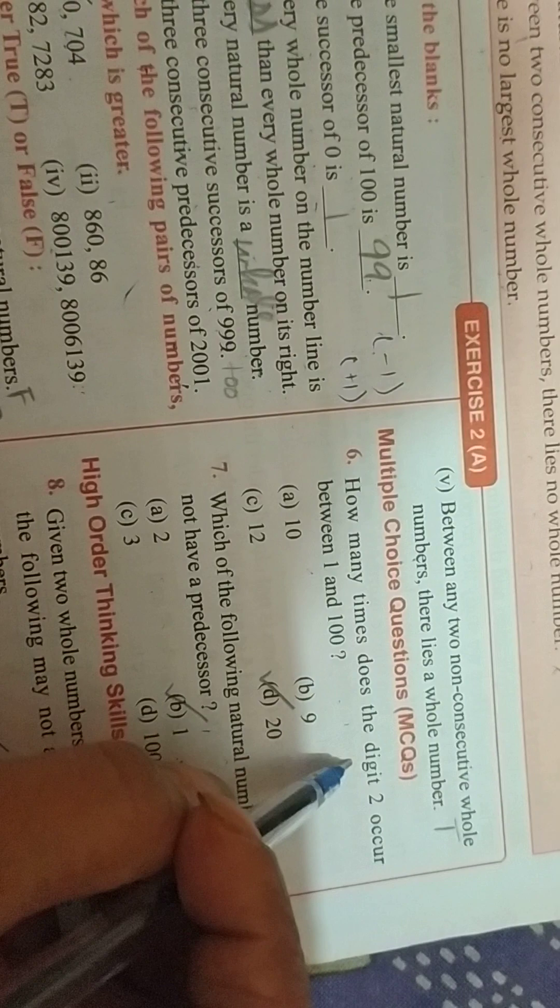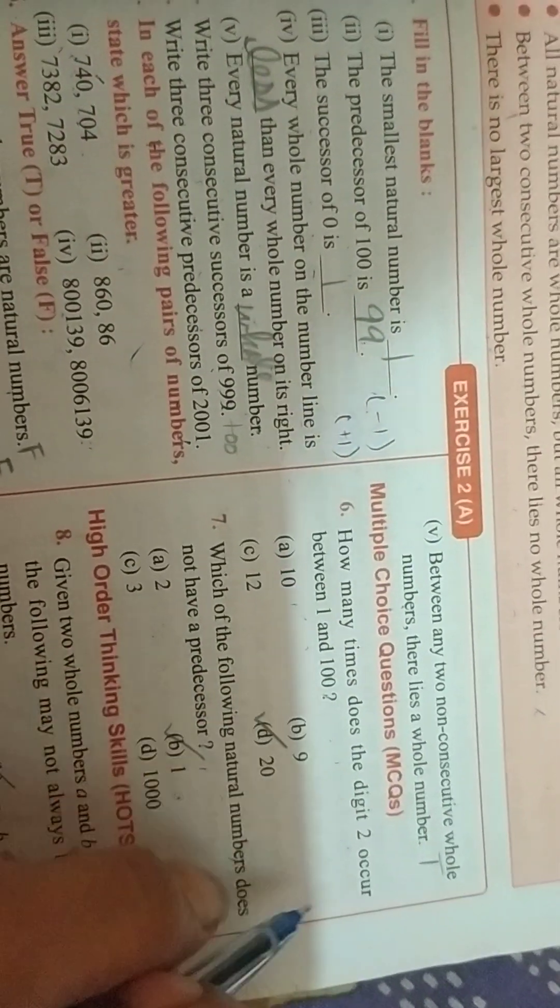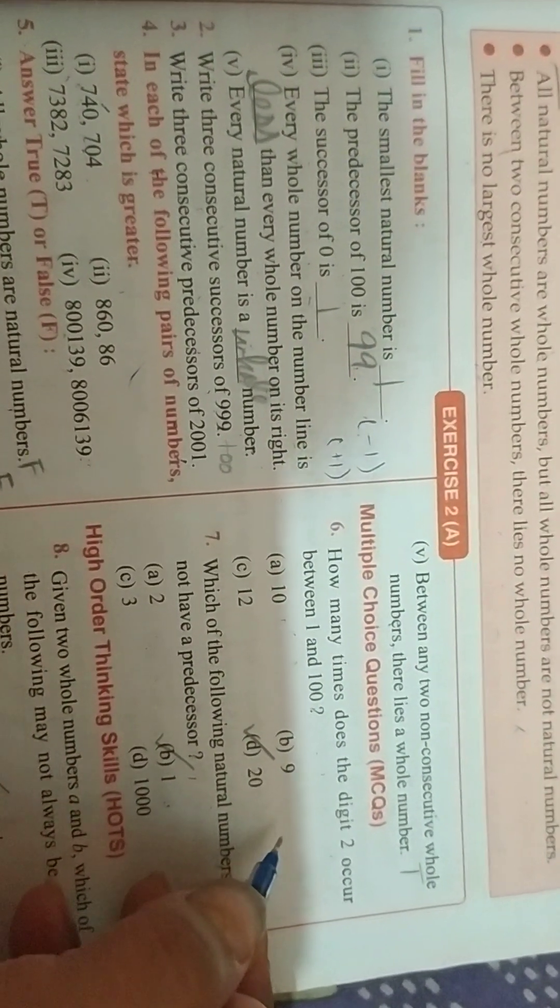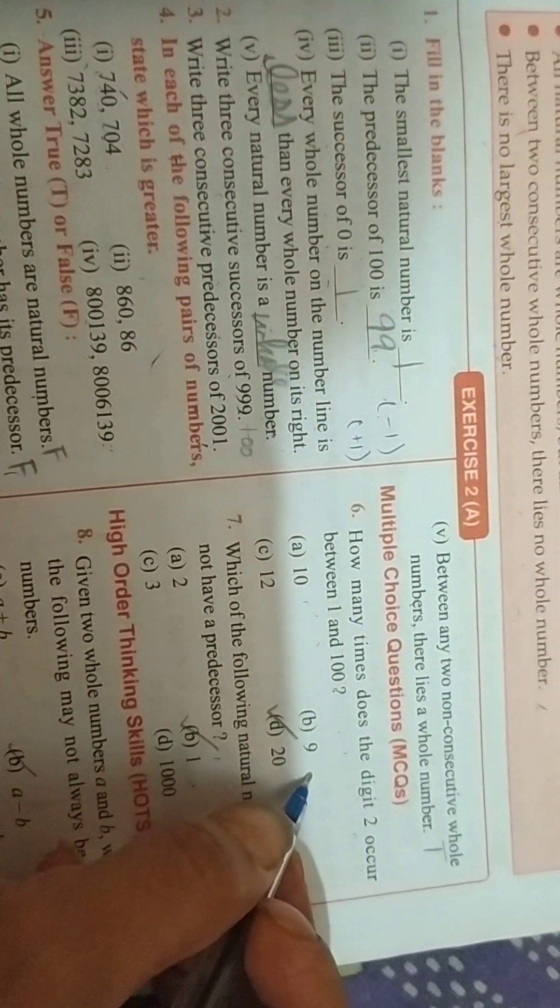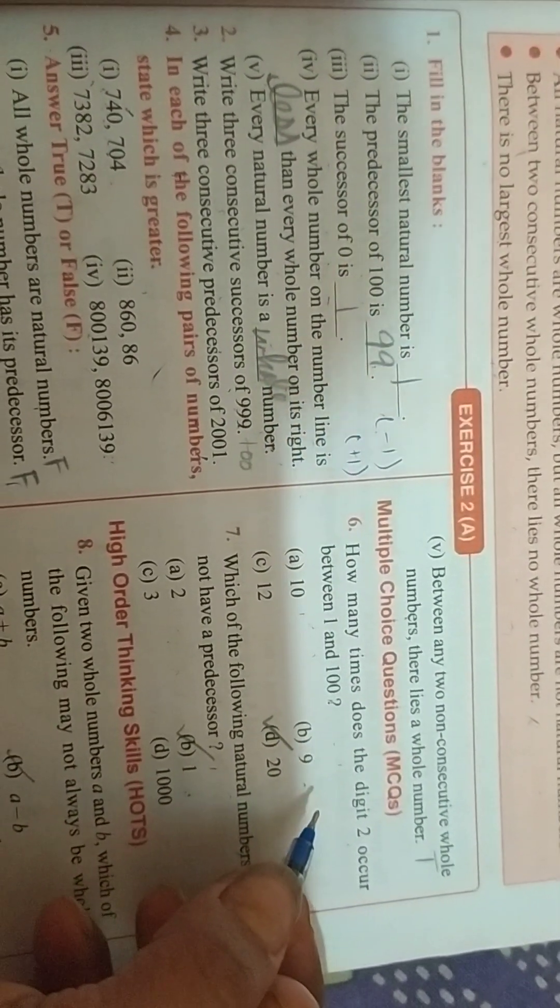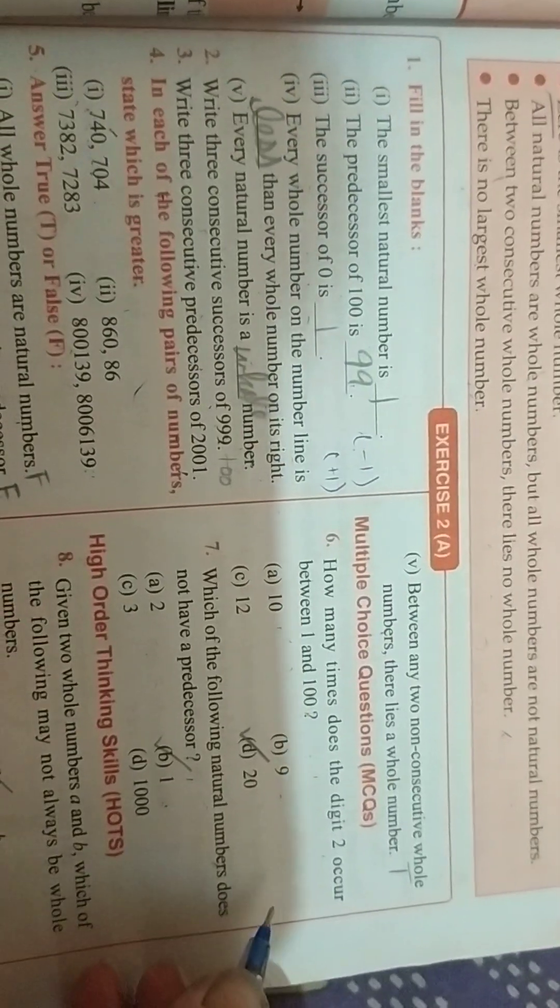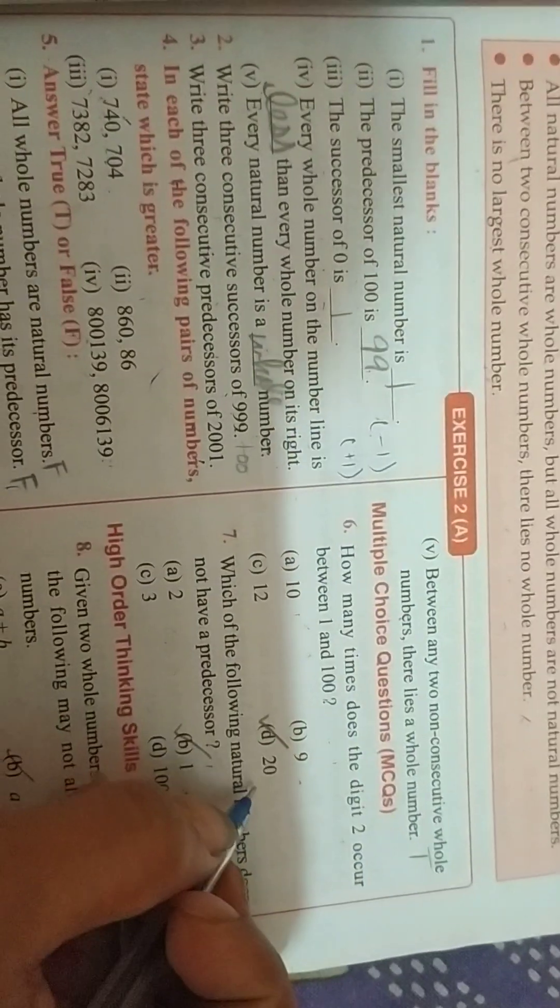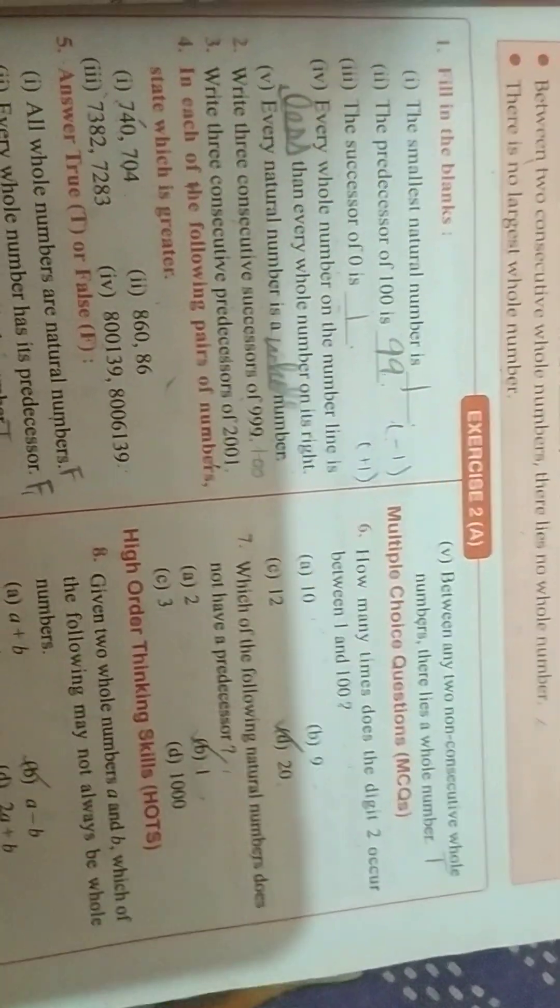How many times does the digit 2 occur between 1 and 100? You can count all the digits just like 2, 12, 20, 22. In this way, you will count it. Then they will be in total 20.